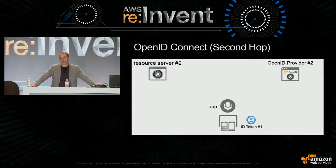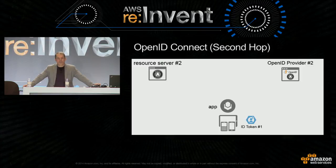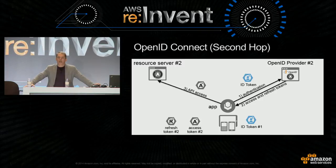I want to talk about the second hop in an OAuth transaction, where you've gone to one provider and gotten an ID token. The ID token is very much like a SAML assertion—it contains identity information, whereas the OAuth token should be used for authorization. What happens is you take the token from the first system, authenticate with that ID token to another OpenID provider, get your access tokens, and access the resources there as well. This is a lot of how AWS functions with an ID token, and we'll see that coming up.